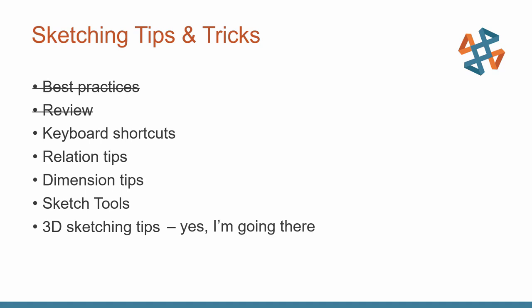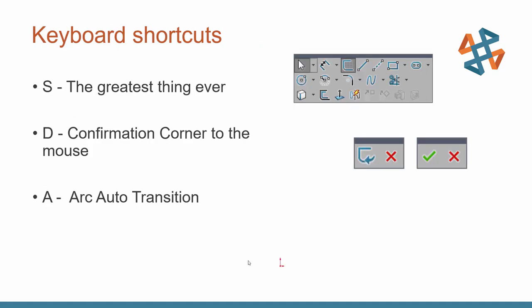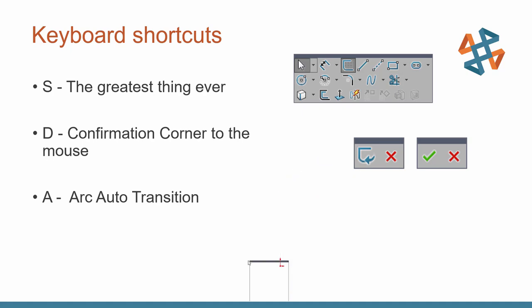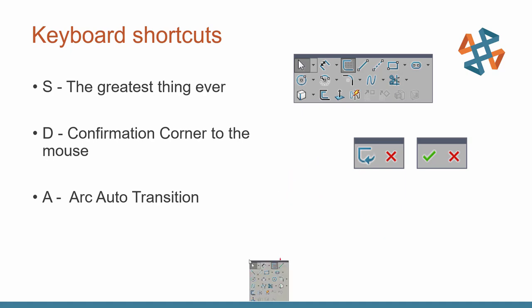Let's keep moving and talk about a couple of keyboard shortcuts you'll see me use later on. First, the S key — I think it's the greatest thing ever. It's just a nice way to get your commands right at the mouse without having to move throughout the UI. I'm not going to go into the details of customizing it, but you'll see me use it in a moment.